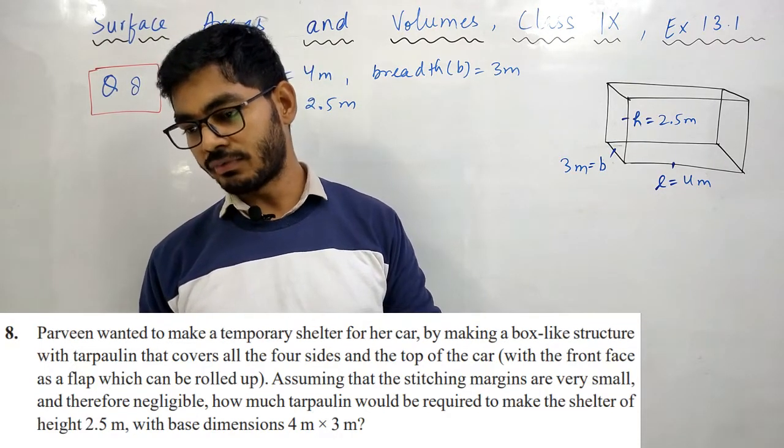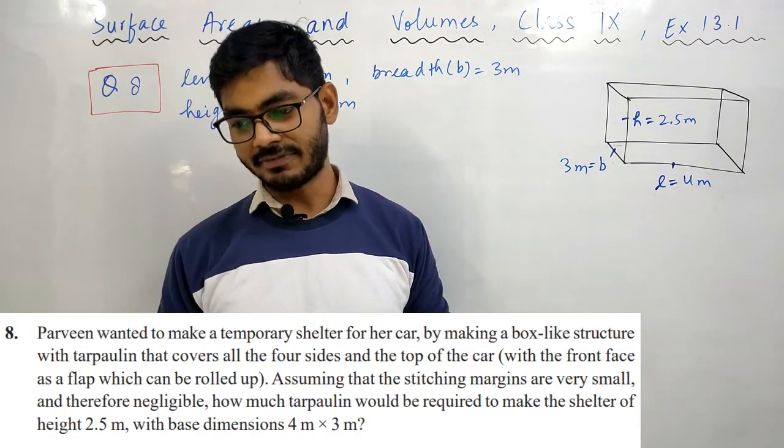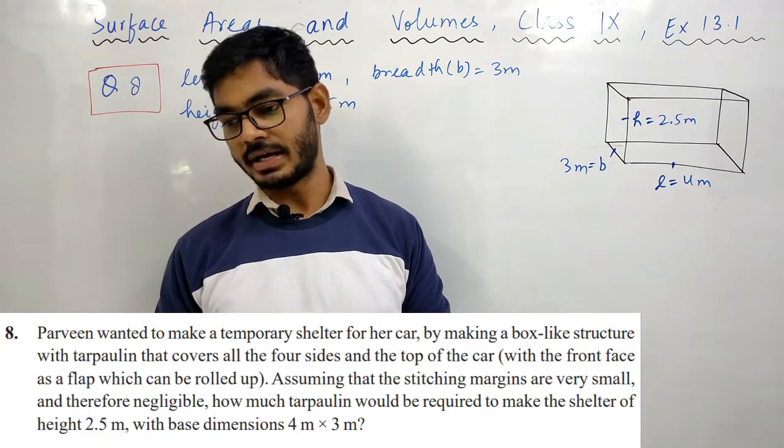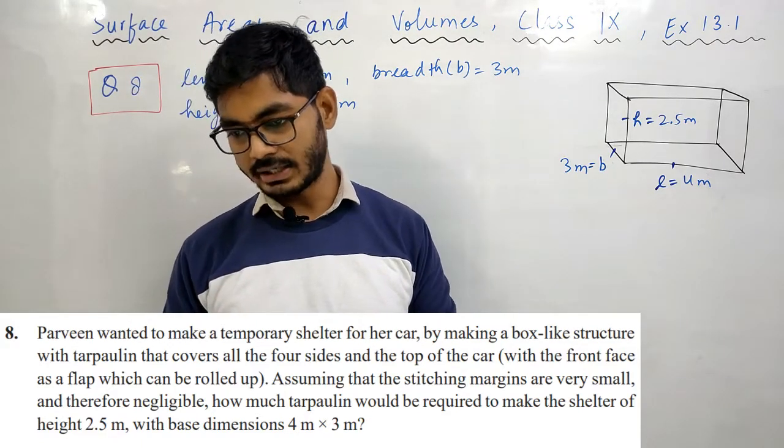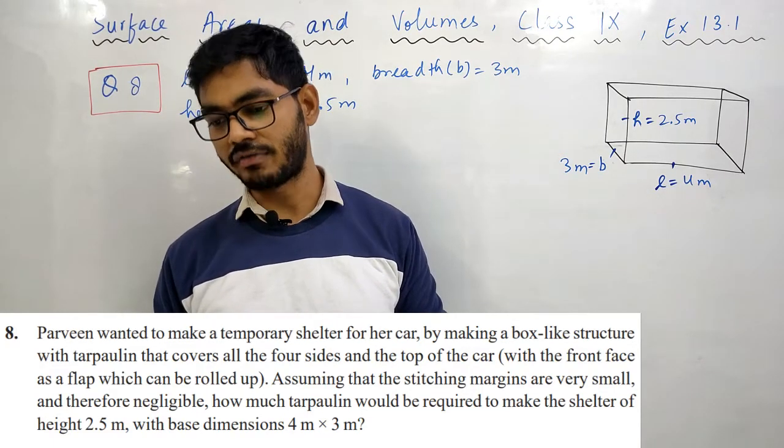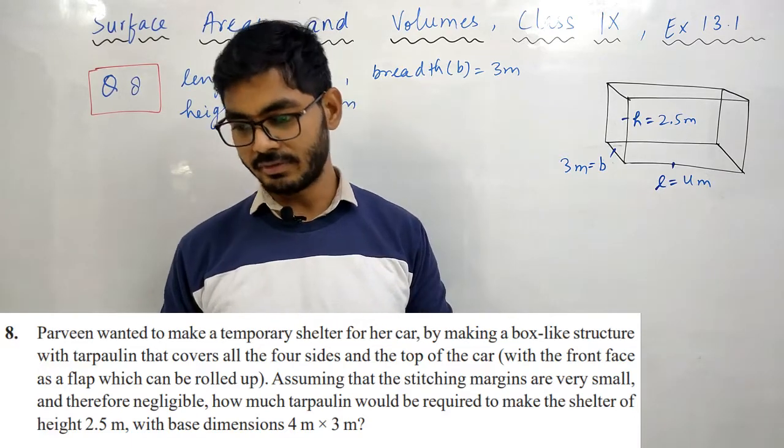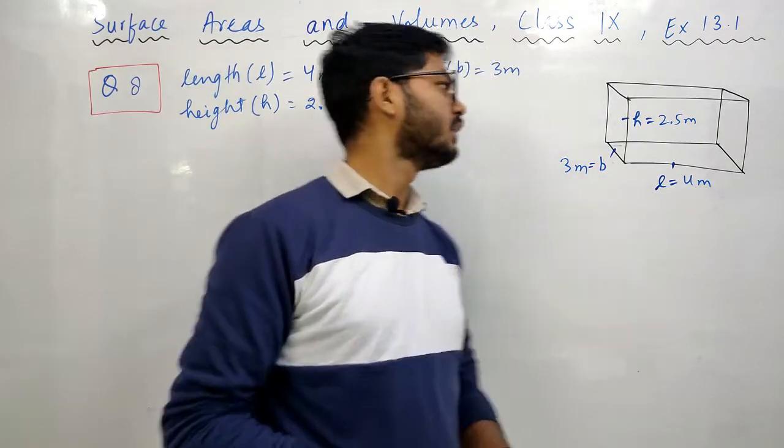that covers all the four sides and the top of the car, with the front face as a flap which can be rolled up. Assuming that the stitching margins are very small and therefore negligible, how much tarpaulin would be required to make the shelter of height 2.5 meter with base dimensions 4 meter and 3 meter?